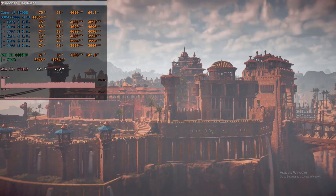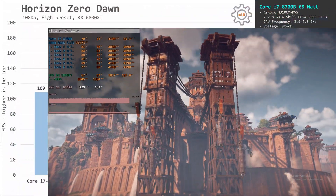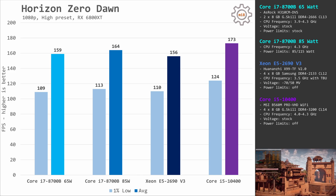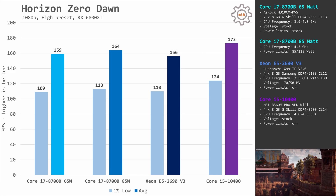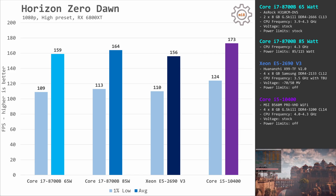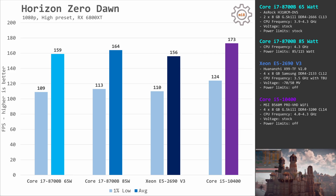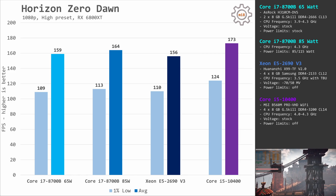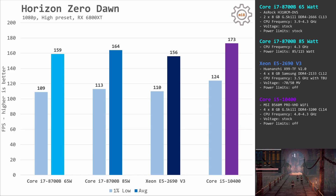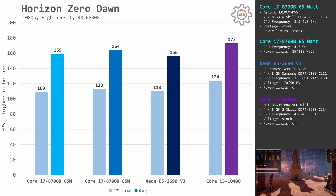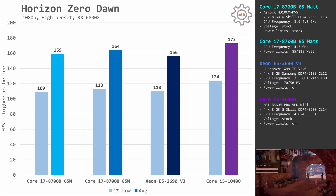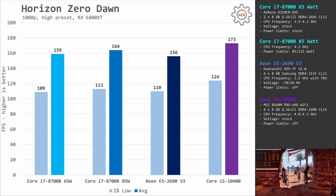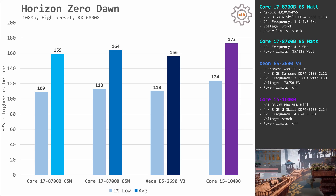Horizon Zero Dawn is a very CPU-demanding game. The 85W configuration of i7-8700B is almost matching i5-10400. With the 65W limit, i7 renders about 109 and 159 fps. Increasing the power limit to 85W, we get 113 and 164 fps. Core i5-10400 delivers 124 and 173 fps — the gap is around 10 fps. Xeon E5-2690V3 is slower than i7-8700B but still competitive: 110 fps minimum and 156 fps on average.